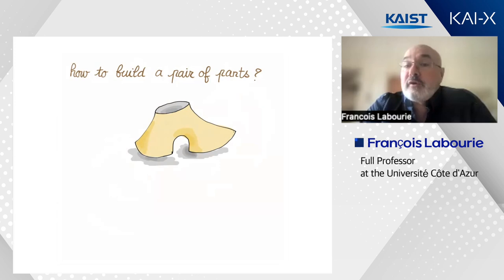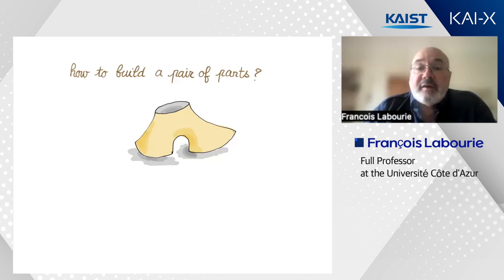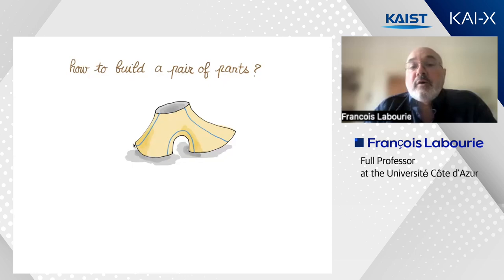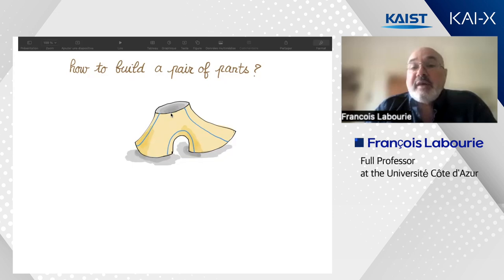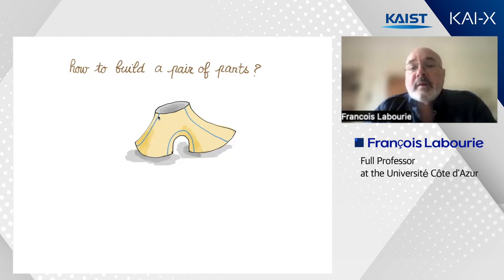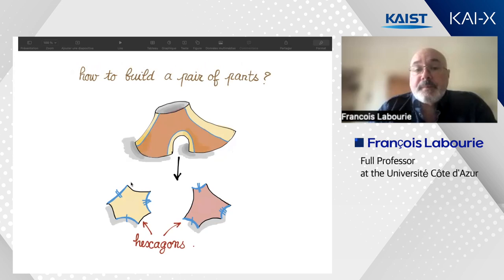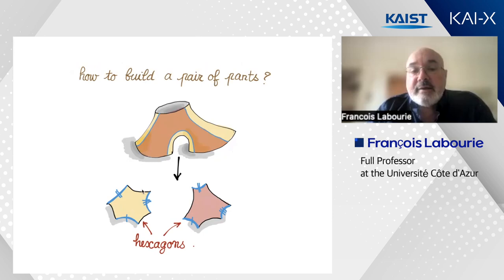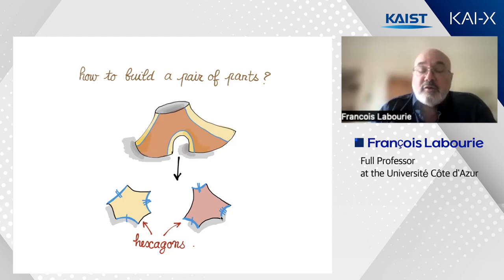You can do a further operation: cut this pair of pants into more elementary pieces. If you want to make a pair of pants, you need flat pieces, so you make a seam. You have three curves, and if you cut along them you obtain two hexagons. You can recover your pair of pants by gluing this side to this side, this side to this side, this side to this side — respecting orientation — to obtain a pair of pants.